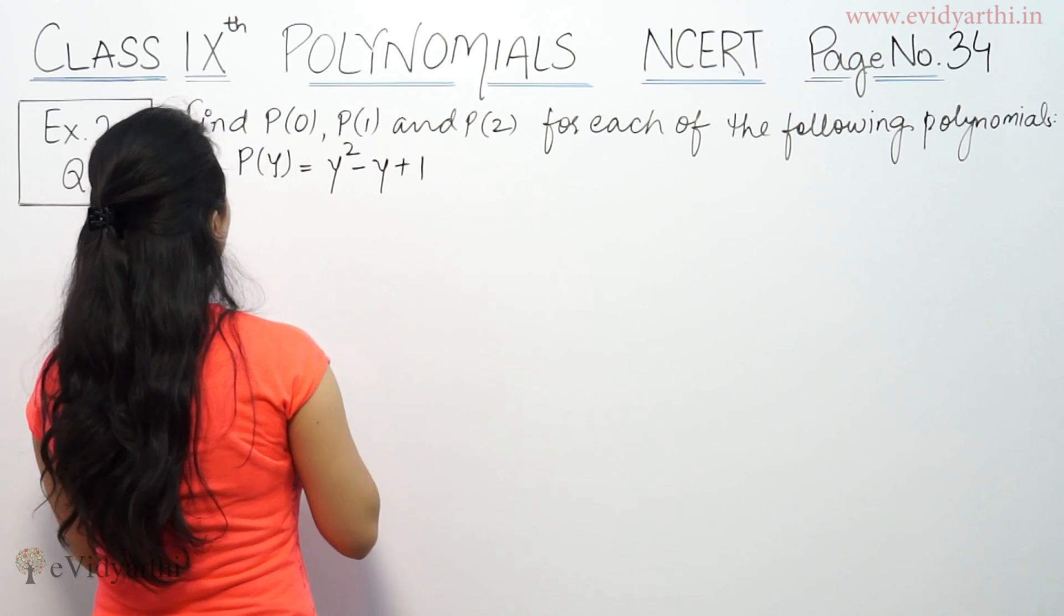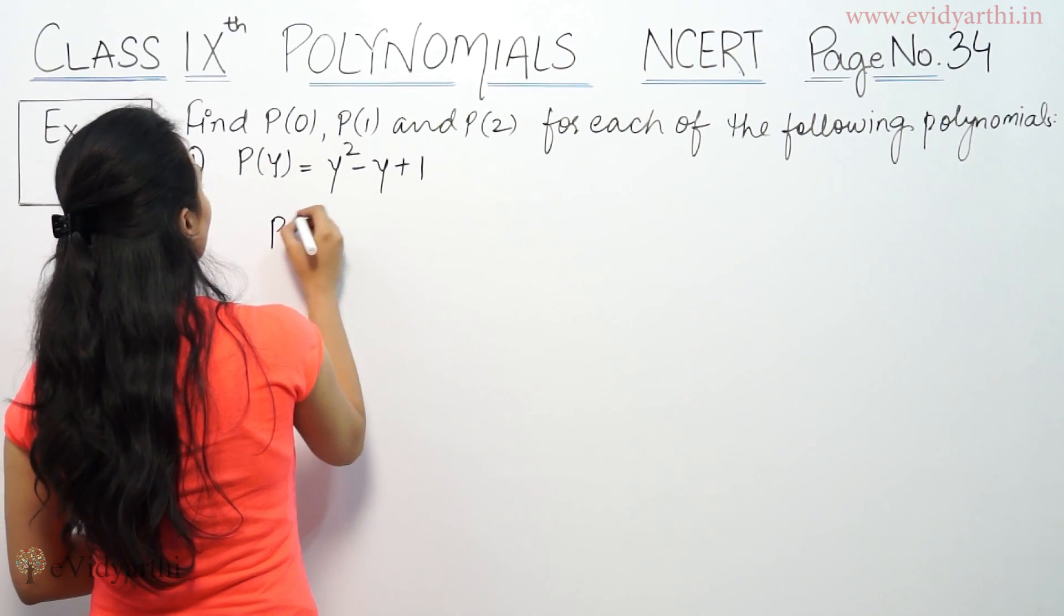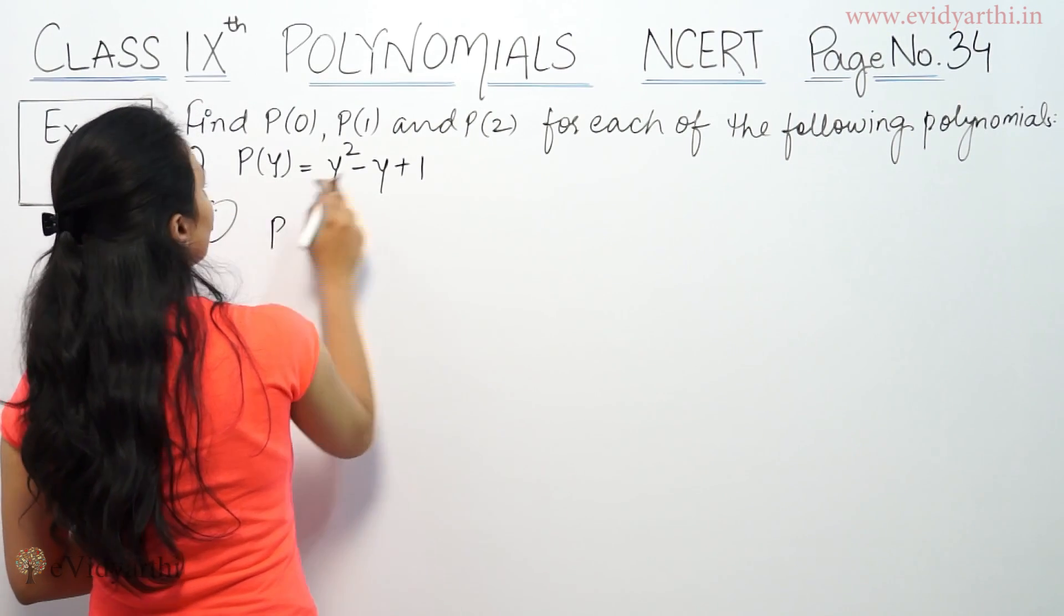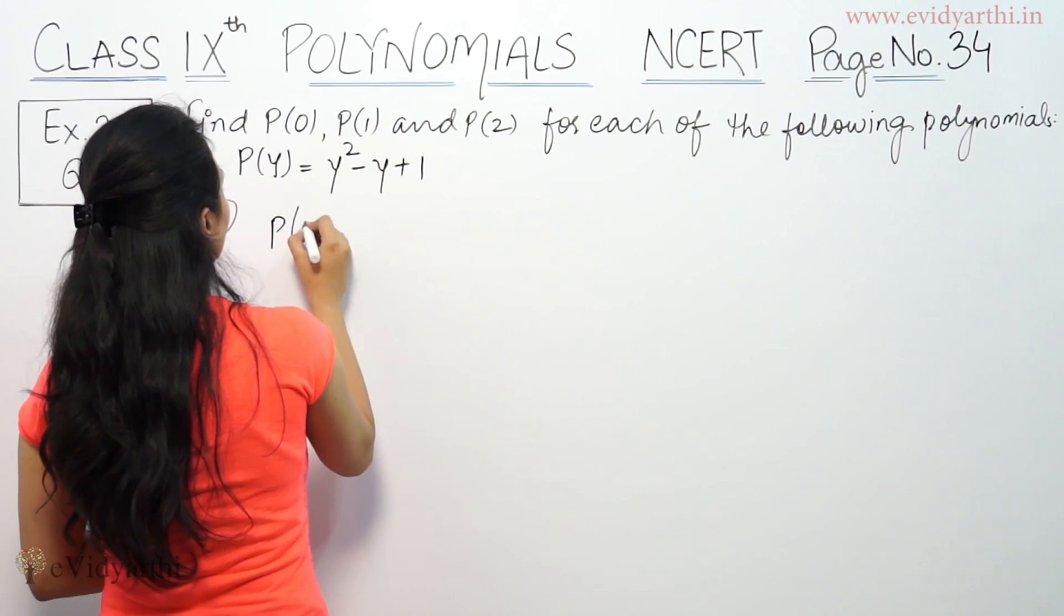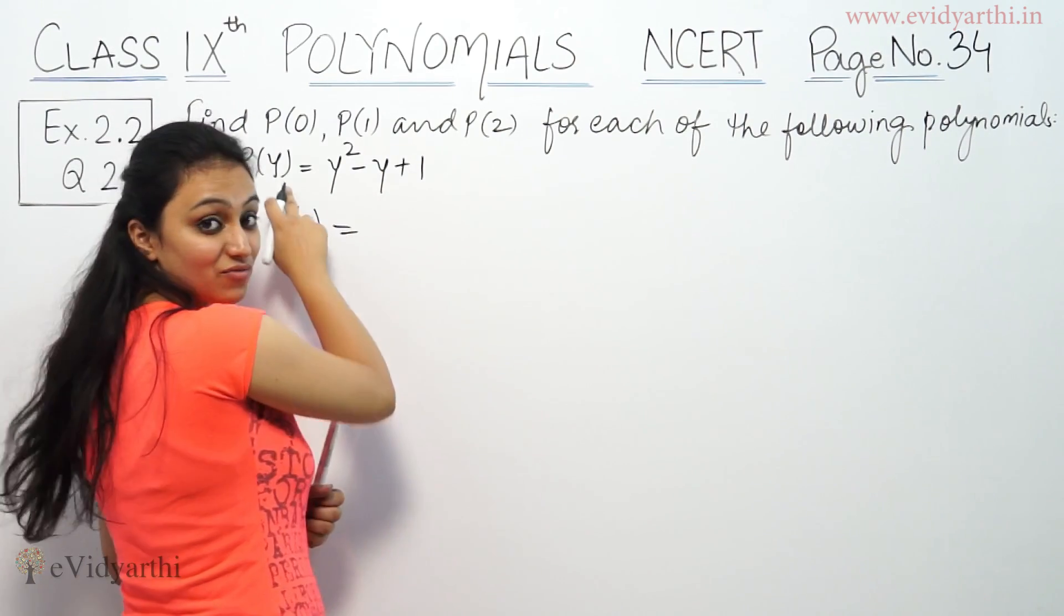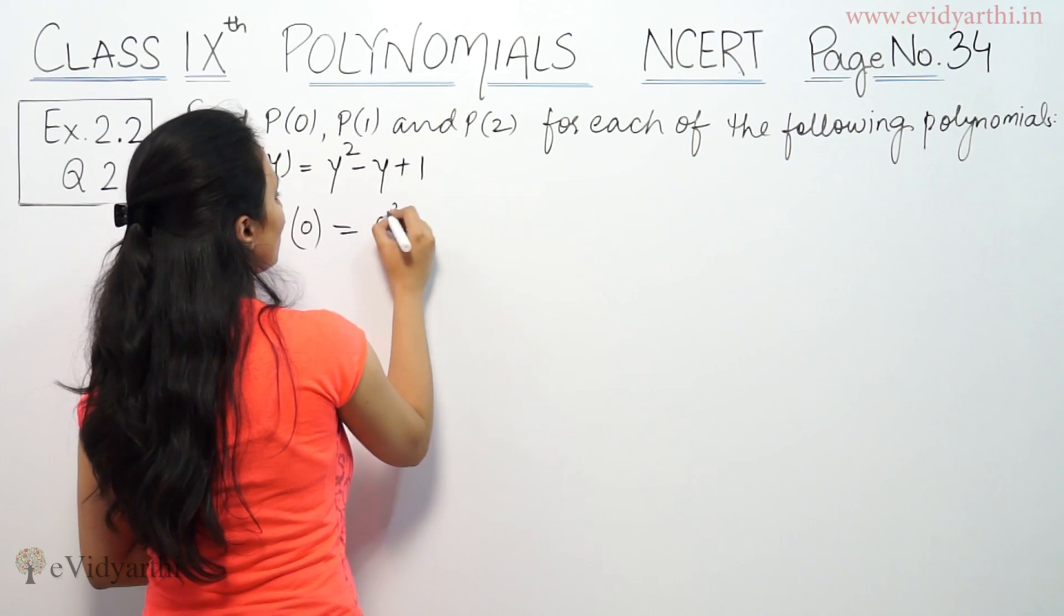So suppose we are going to the first one. First, find P(0). P(0) means y when you put 0, and wherever y will be 0.